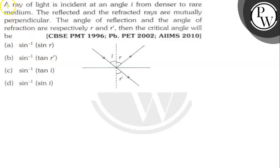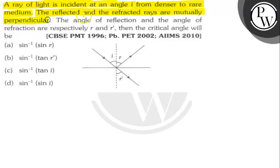Let's read the question. A ray of light is incident at an angle i from denser to rarer medium. The reflected and the refracted rays are mutually perpendicular. The angle of reflection and the angle of refraction are respectively R and R-dense. Then the critical angle will be what?